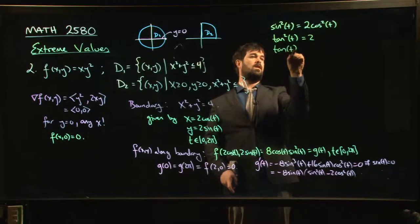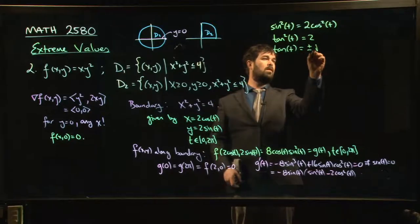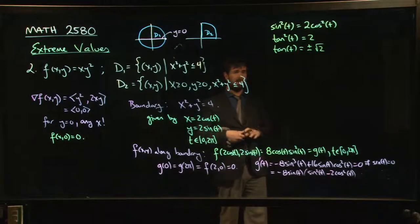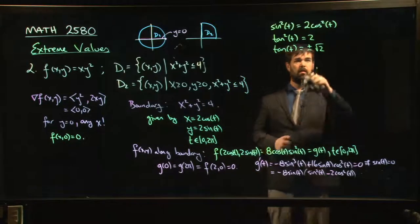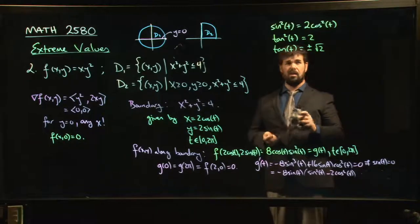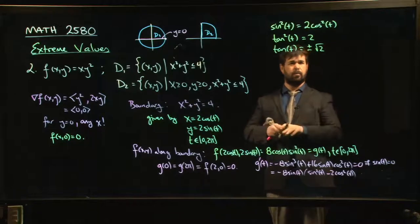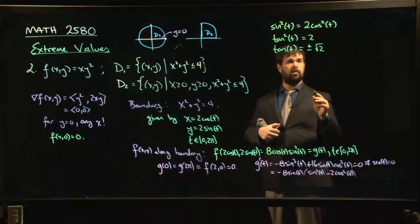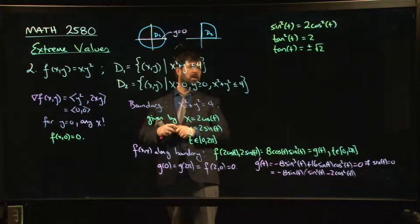So tan t would be plus or minus root 2. Now, the tricky thing with that, those aren't standard kind of points on the unit circle. Where is tan t equal to root 2? Well, you could use your calculator if you want, I suppose. You could figure that out. But we don't want to do that. So how do you figure out your points? You know that tan t equals plus or minus root 2. You want to get back to points on the circle. How are we going to do that?